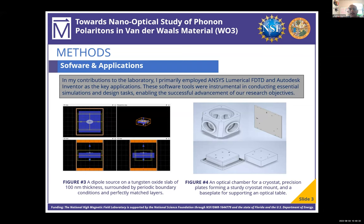The periodic boundary conditions help to simulate an infinite plane in the XY direction, and perfectly matched layers on the Z direction help to absorb scattering electric fields, allowing us to get accurate results. In Autodesk, I've been designing multiple devices, such as a base plate for supporting an optical table, an optical chamber for a cryostat — a device that lowers the temperature surrounding the material so we can test its properties at that temperature — and plates that create a mount for the cryostat.